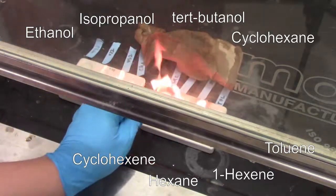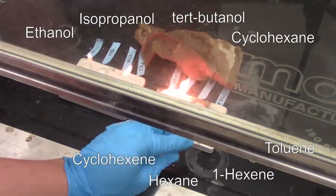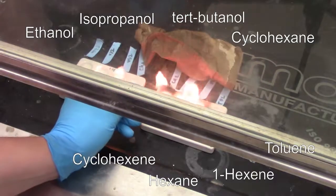If you look at something like the alkenes, these are going to burn with a lot more soot than something like the toluene, which is actually already gone out.